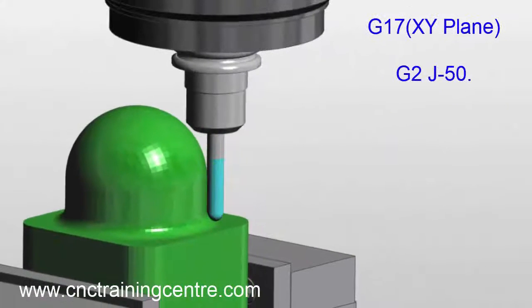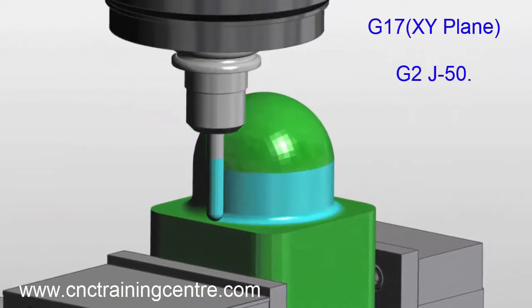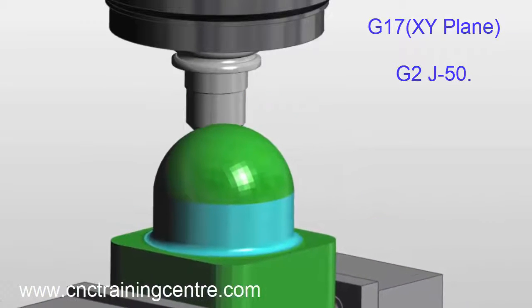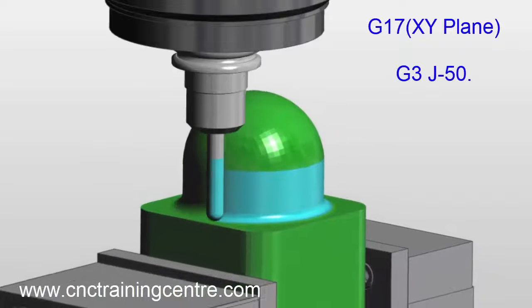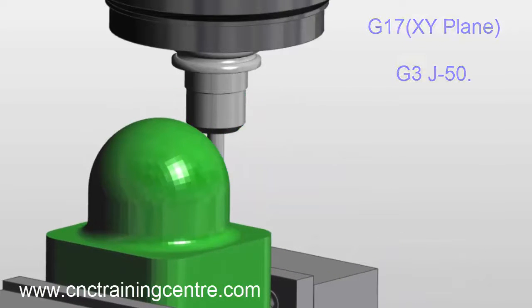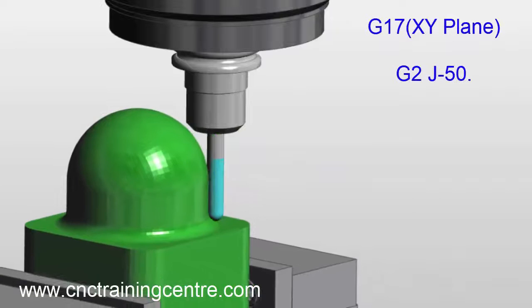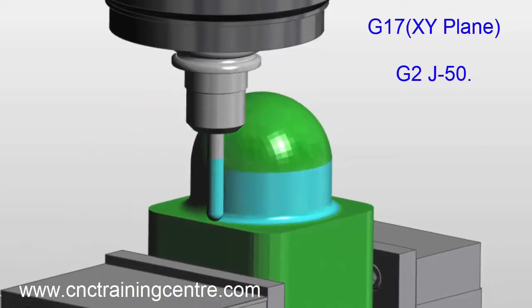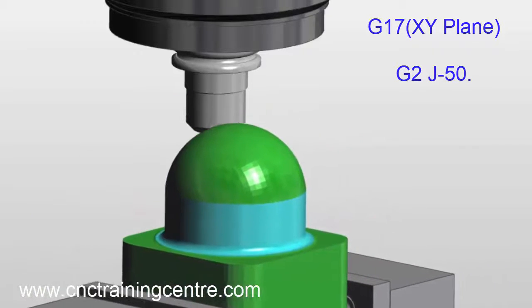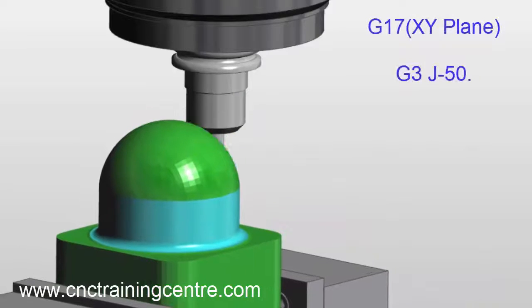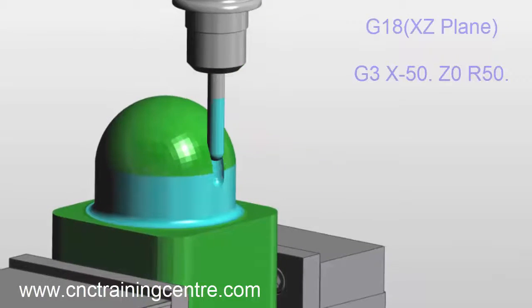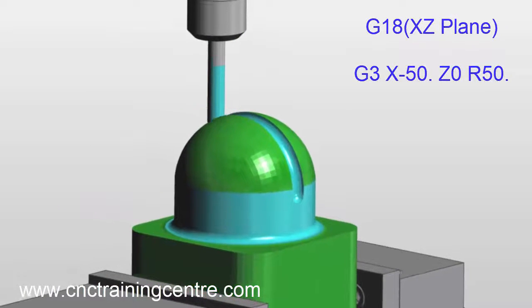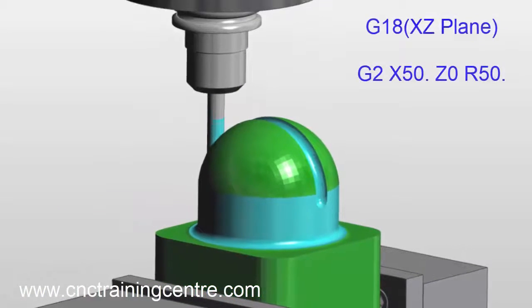A CNC machine or CNC control uses three plane selections depending on how we want to do our G2 and G3 commands. A machining center or milling machine will always default to G17, which is the XY plane, and a lathe will always default to G18, which is the XZ plane.